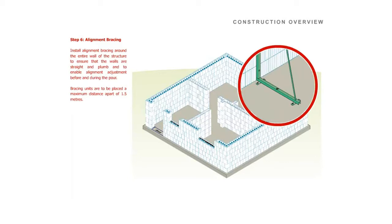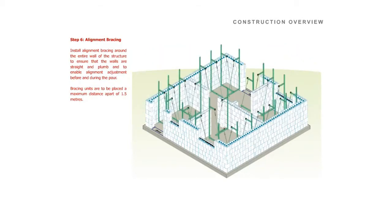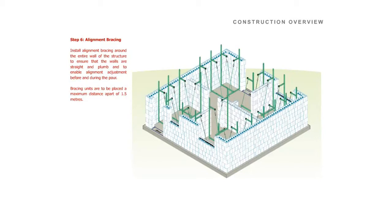Step 7. Install the alignment bracing around the entire wall of the structure to ensure that the walls are straight and plumb and to enable alignment adjustment before and during the pour. Step 8. Reinforced steel bracing units are to be placed at 1.5 metre intervals. The bracing units also provide a safe and secure framework to facilitate the pouring of the concrete.